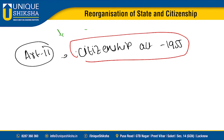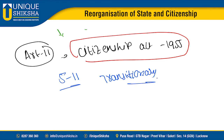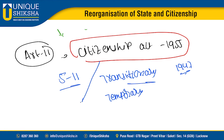The Citizenship Act 1955 is the comprehensive legislation on citizenship — more comprehensive than Articles 5 to 11, which are largely transitional provisions dealing with the sudden migrations caused by the 1947 partition — more than 10 million people migrated. The Citizenship Act 1955 lays conditions for both acquisition and loss of citizenship.